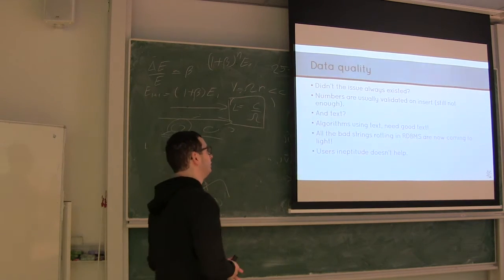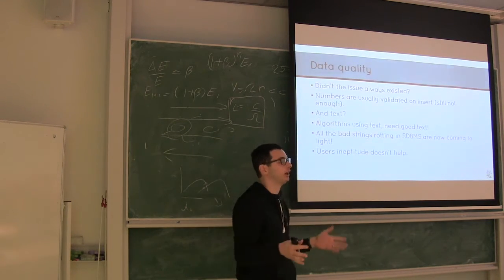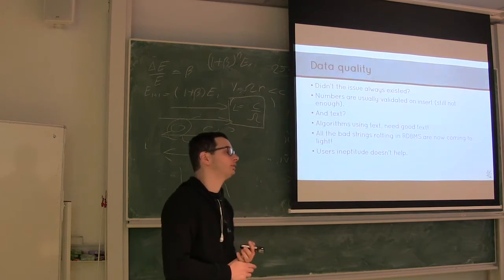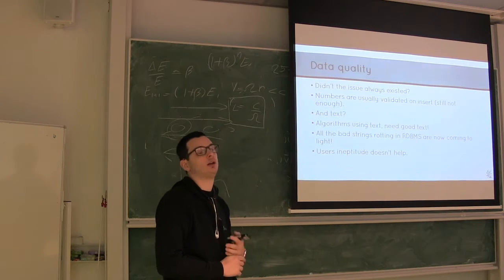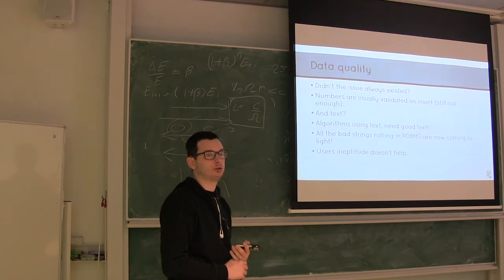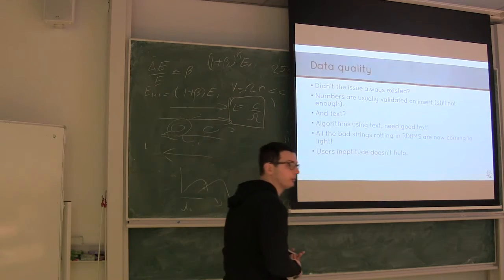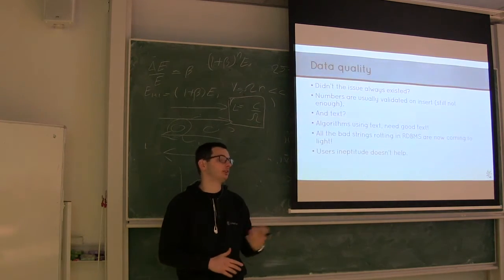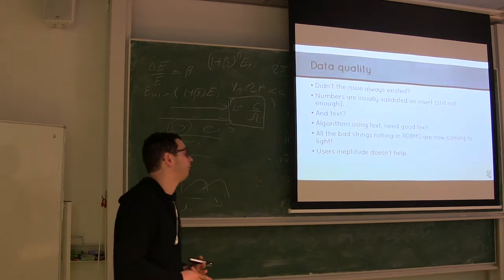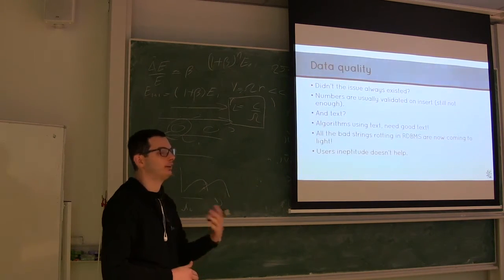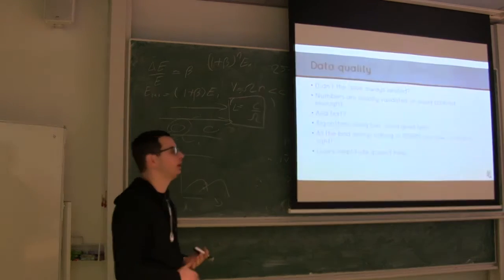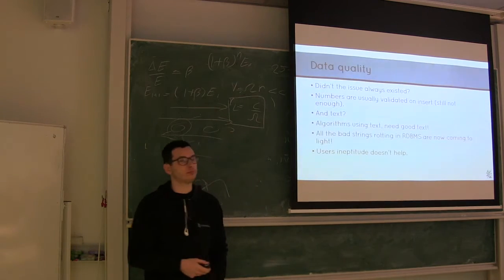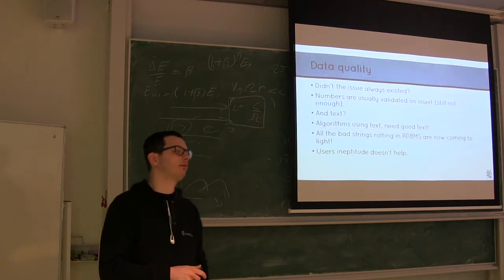So you say, this is a number, this is something else. And when you put new data in, the database warns you or actually blocks you if the data is not in a good format. In Excel, you also can give the type, but it usually doesn't complain. If data is not in a good format, a database usually will do that. So numbers are validated on insert, and even though it's still not enough, and we'll see why.